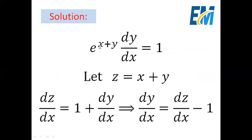First, we will take x plus y as z. Note that here x is a variable, and z and y are functions of x. So, z equals x plus y, then dz over dx will be the derivative of x, which is 1, plus the derivative of y, which is dy over dx. So, dz over dx equals 1 plus dy over dx.